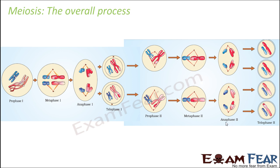Now let us look at the meiosis overall process. It all started from prophase 1 with a diploid cell, which underwent prophase 1, metaphase 1, and anaphase 1. After telophase 1, two haploid cells were produced. Then the sister chromatids were again separated, and as a result four haploid cells were produced.